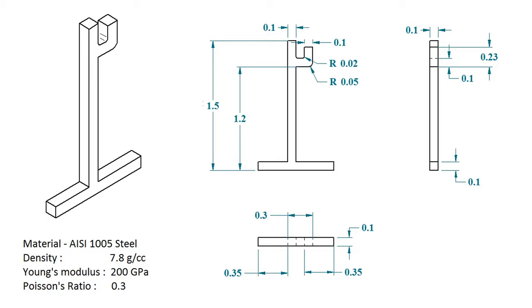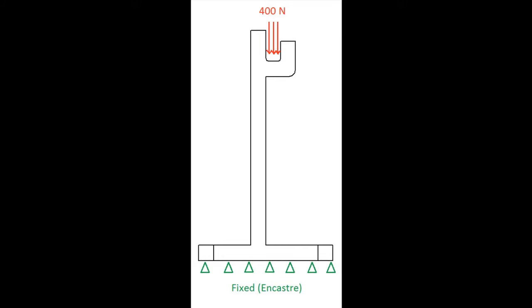We do not need both barbell stands in the analysis — we can just use one and assume it carries half the weight of the barbell. To simplify the simulation further, we don't model the barbell at all, but replace it with a force equal to its weight. A force equal to half the weight of the barbell will be applied in the U-shaped clamp where the barbell will sit. The base of the barbell stand, which is normally in contact with the ground, will be fixed in space using an encastre boundary condition, meaning it cannot translate along the X, Y, or Z axes, nor can it rotate about them.